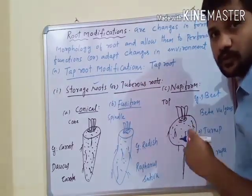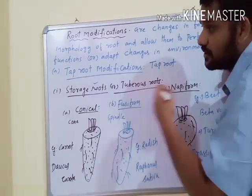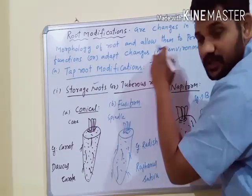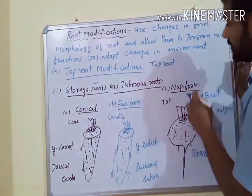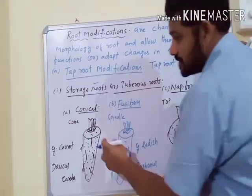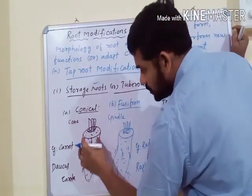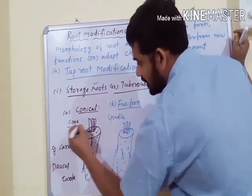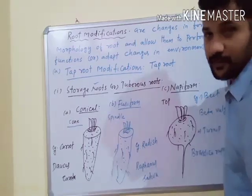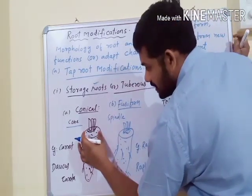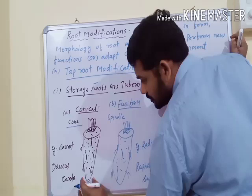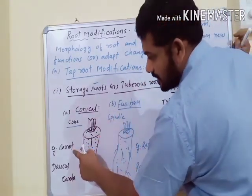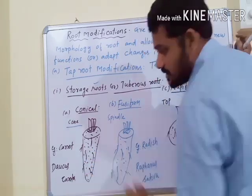Due to stored food material in them, these Storage Roots attain various shapes: Conical Shape, Fusiform Shape, and Napiform Shape. In Conical Shape, the Primary Root or Tap Root, with or without the hypocotyl, stores food material and gives a cone-like appearance. The root is broad at the base and gradually tapered towards the apex. A Conical Shape of Tap Storage Root is found in Carrot — scientific name Daucus carota.